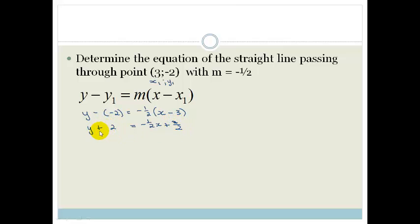And then of course we have to solve for y because we want it in the normal standard form. And remember the standard form is y equals mx plus c. So this becomes y is equal to minus a half x plus 3 over 2 minus 2, which is equal to minus a half x. 3 over 2 is 1 and a half, so you've got 1 and a half minus 2 is just going to be minus a half.